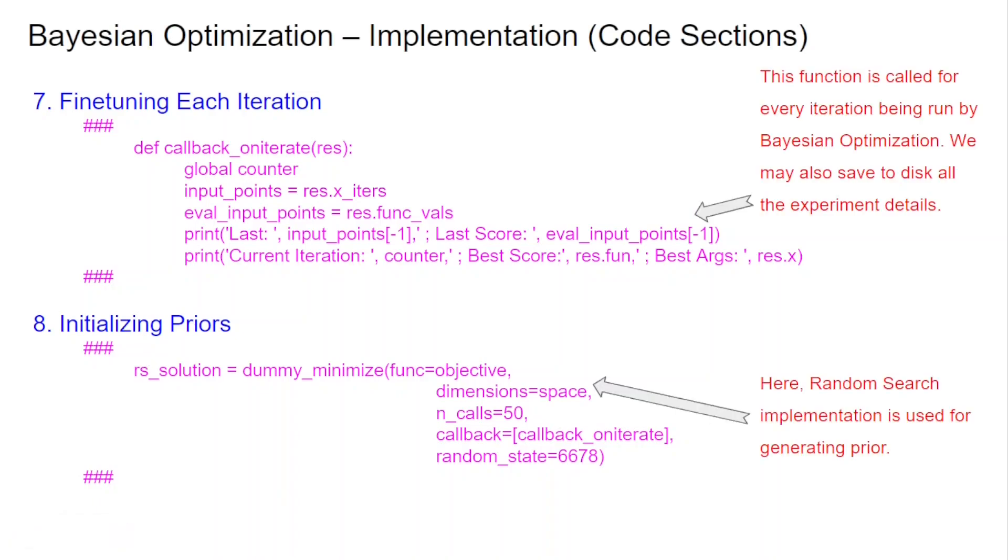So you have seen the 8 steps so far. 9th step is really tying them all together with the Bayesian code, putting the minimize together. So here we are going to be using gp_minimize which is Gaussian process minimize function from the Bayesian package. What we are seeing is my function is my objective function which I earlier defined and my starting point is my random search solution that I have in hand.